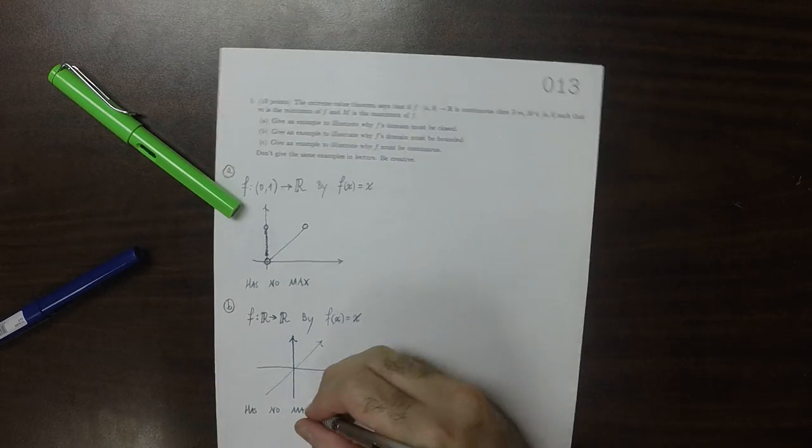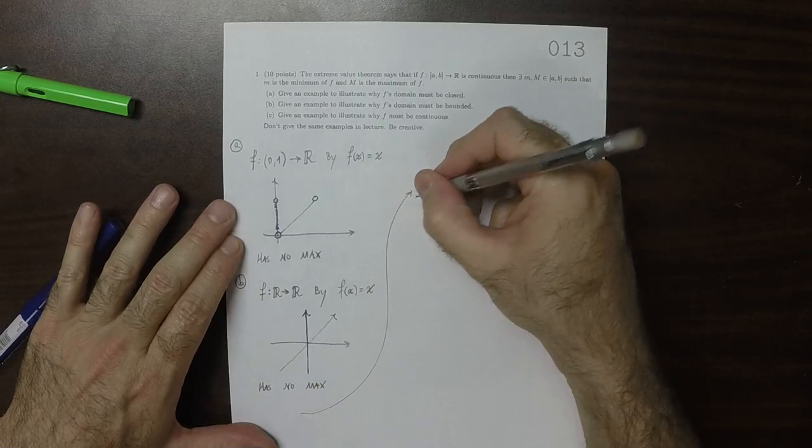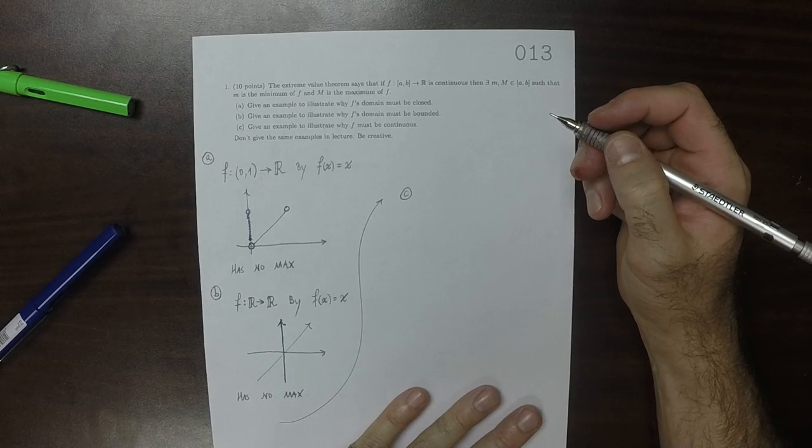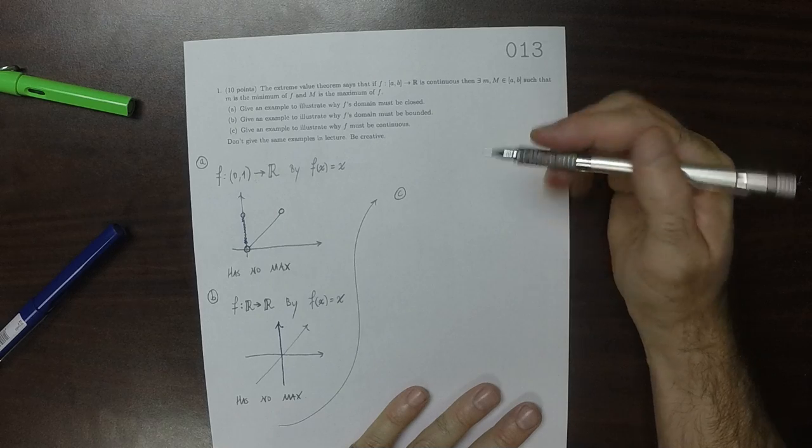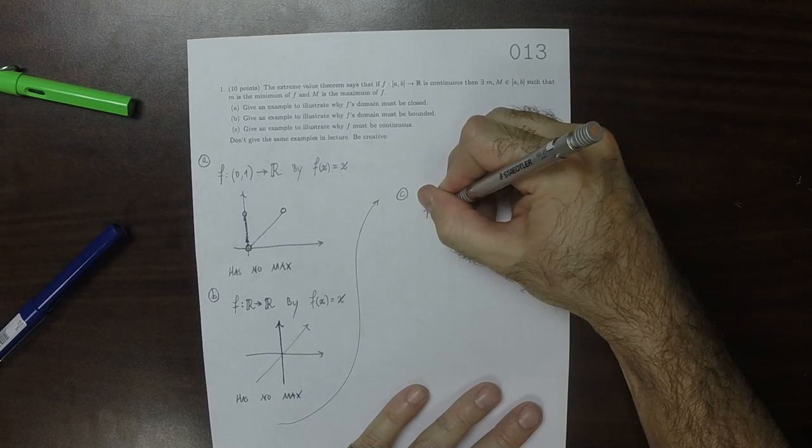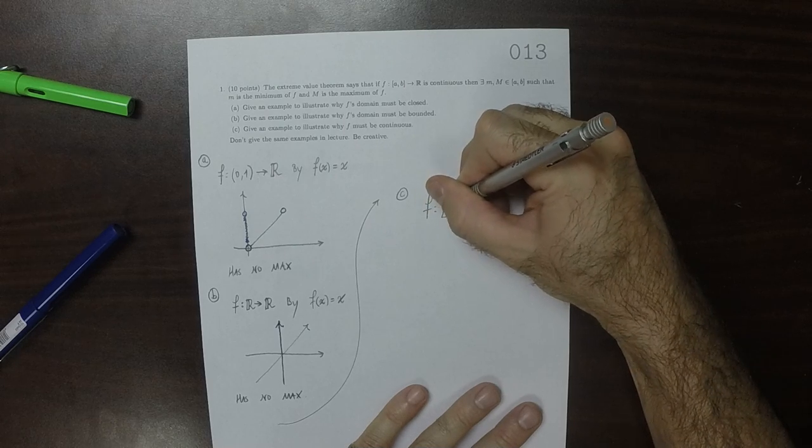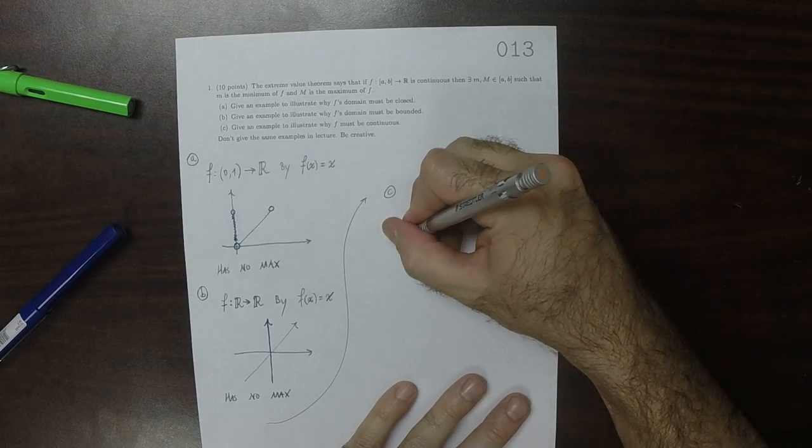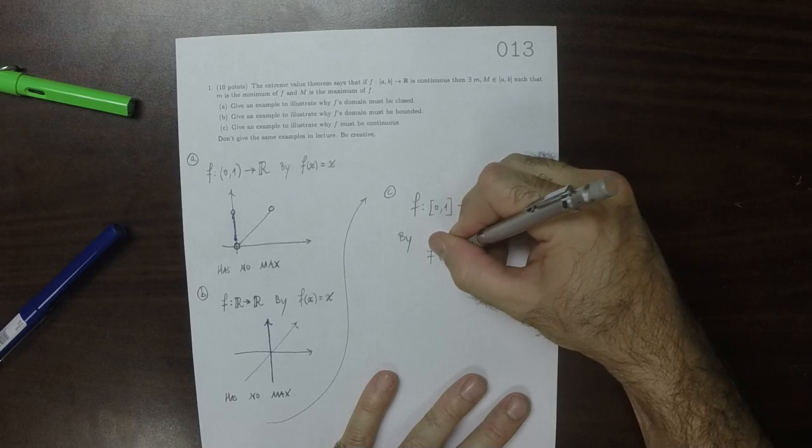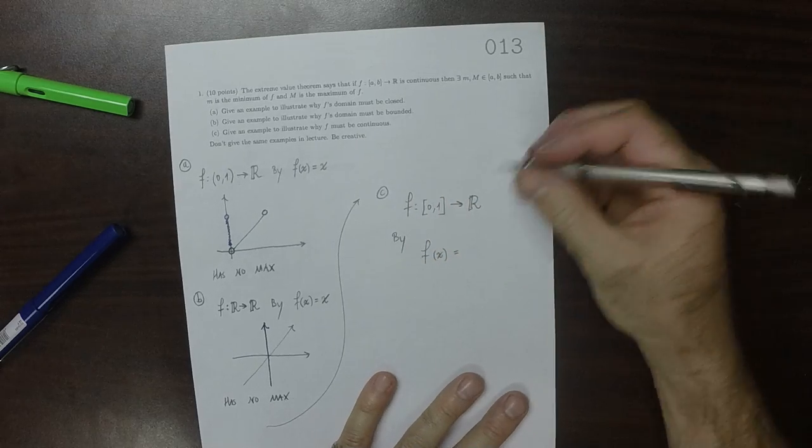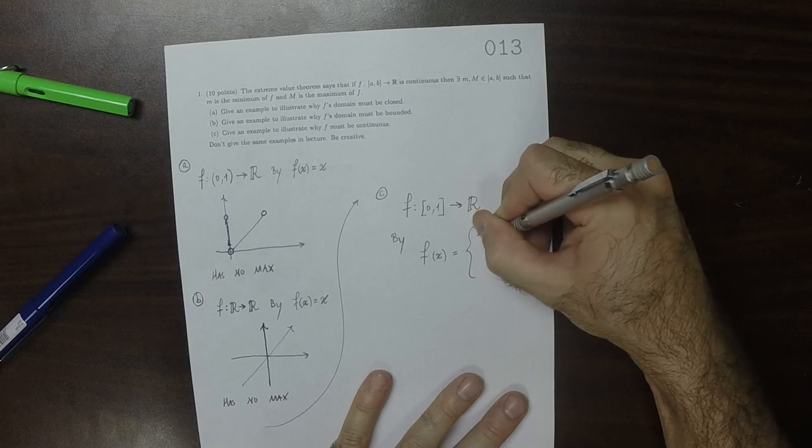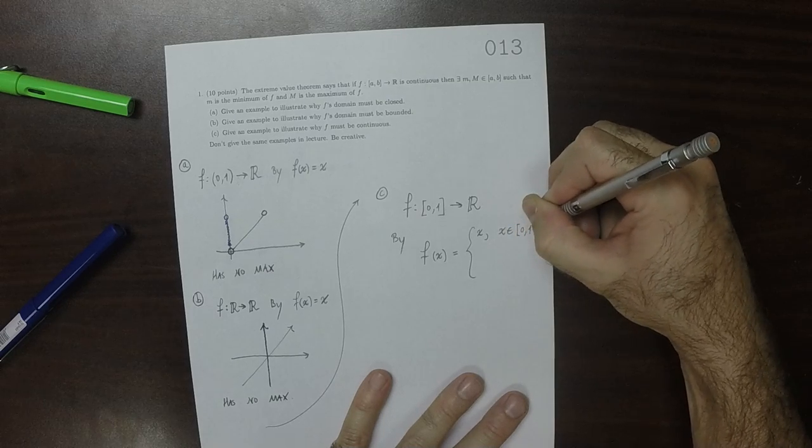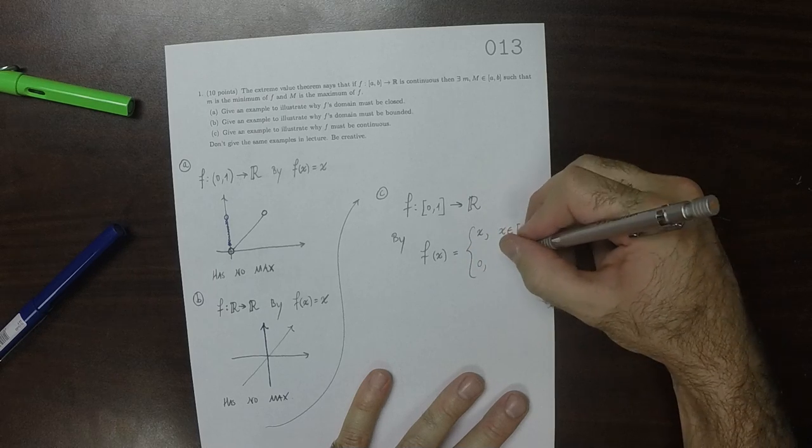And then how about part C, we could do. So let's put F on a closed and bounded set. So F from 0 to 1 to the reals. And let's do this by the definition F of x is x if x is anything but the right end point and it's 0 otherwise.